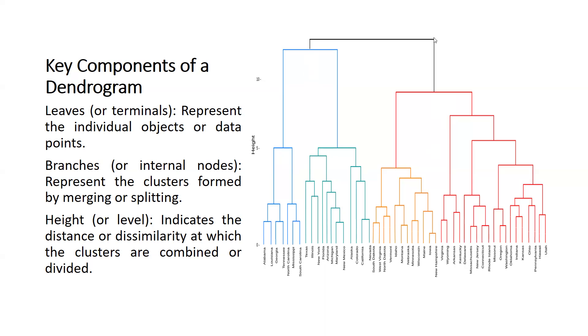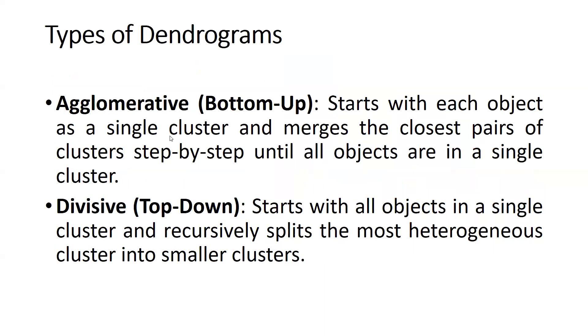Now we would understand these horizontal lines as well as these vertical lines in this dendrogram. Types of dendrogram - agglomerative bottom-up starts with each object as a single cluster and merges the closest pairs of clusters step by step until all objects are in a single cluster.